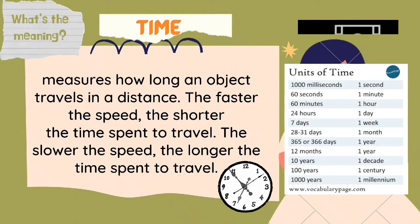Let's define time. Time measures how long an object travels in a distance. The faster the speed, the shorter the time spent to travel. The lower the speed, the longer the time spent to travel.